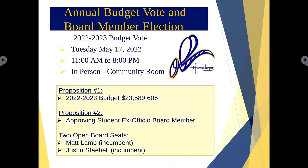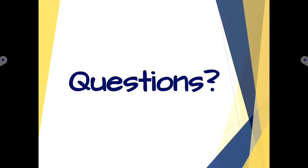The budget vote is Tuesday, May 17th from 11 to 8 in the community room, in person. Proposition one is the budget appropriations, proposition two is approving a student ex officio board member, and we have two open board seats up for election — two incumbents turned in applications: Matt Lamp and Justin Stavelle. Does anybody have any questions?